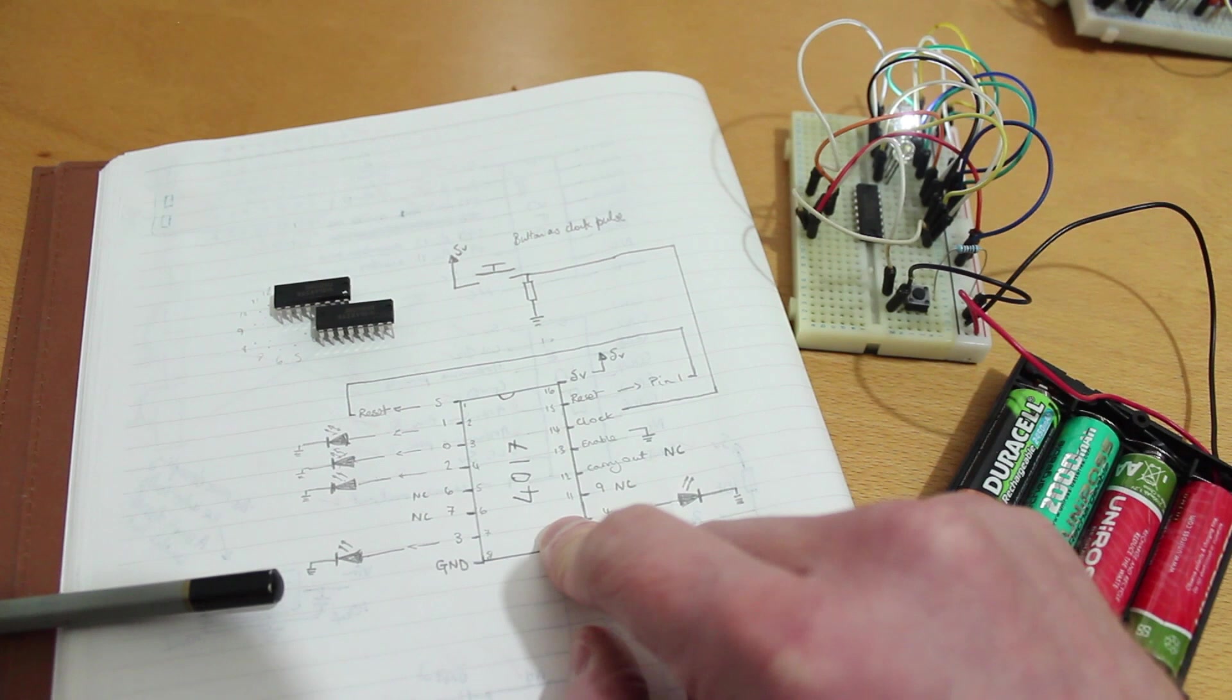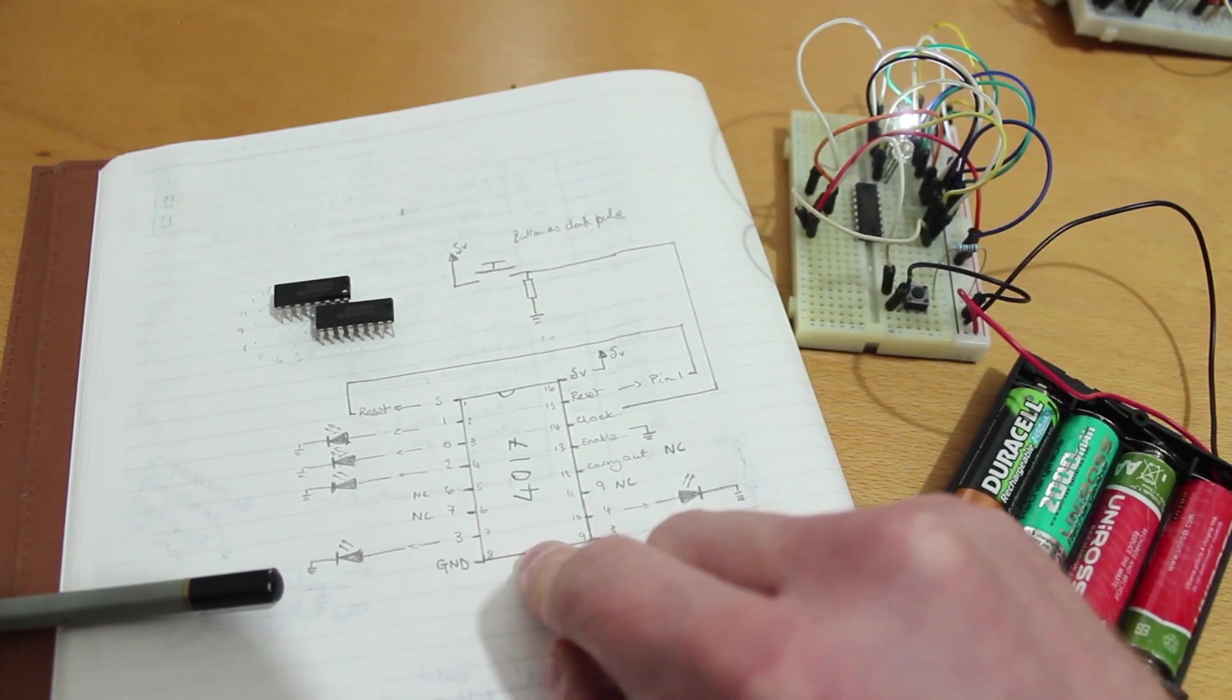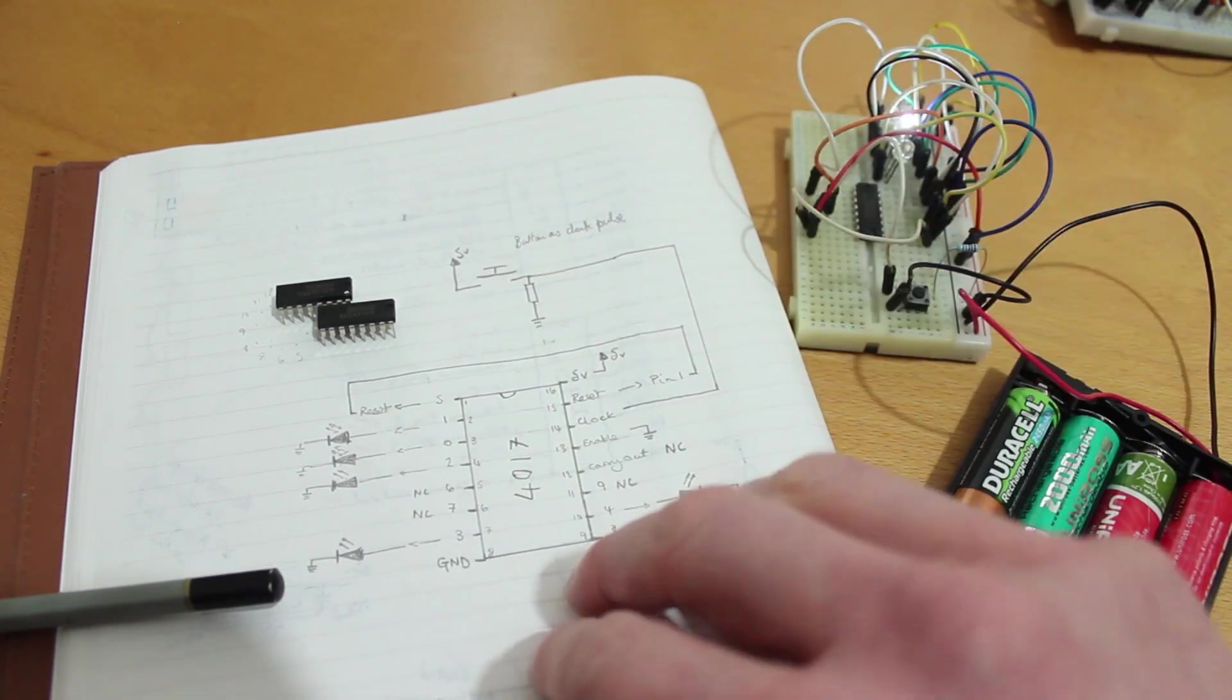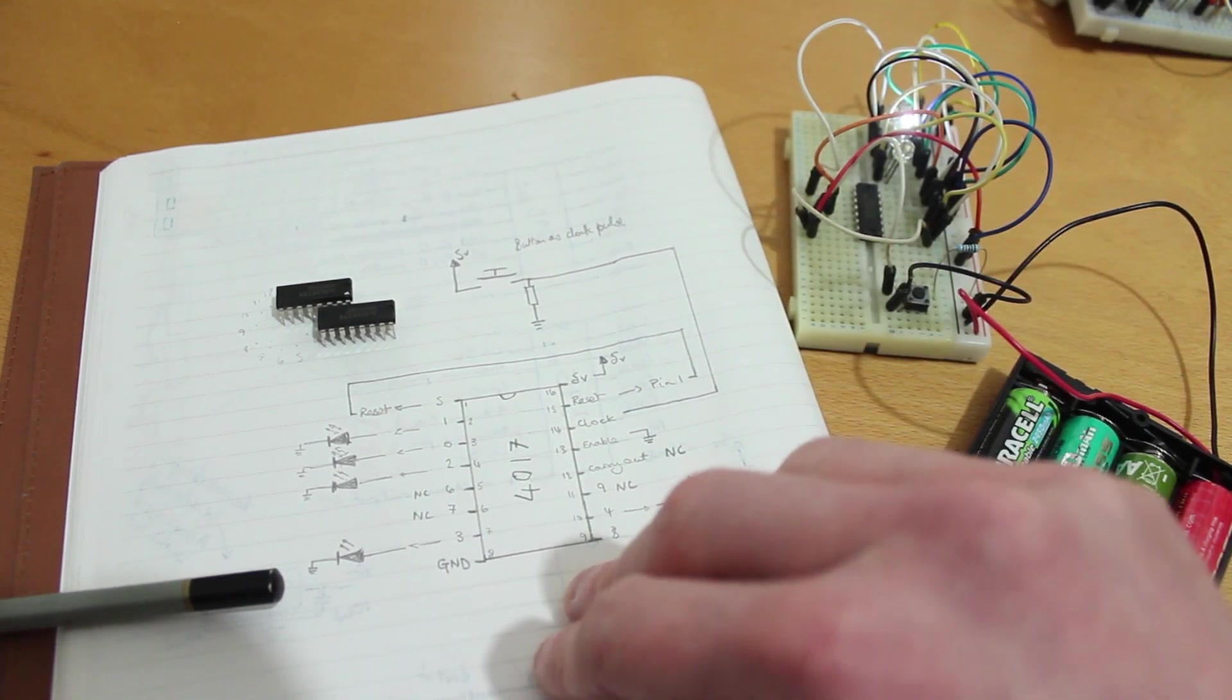So this one's a decade counter. It's got a Johnson counter sort of built in, which is part of this five subset thing that it's got going on. But that's all the internal workings. We just want to know how we can use it.